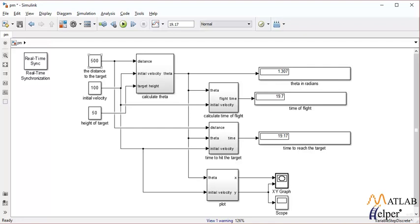The distance to the target in the horizontal direction was 500 meters, so that is this value. Initial velocity of the rocket is 100 meters per second, so that is this value. And the height of the target was given as 50 meters, so that is this value.